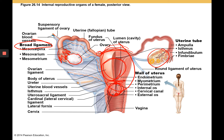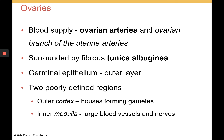The external os is near the vagina and the internal os is near the isthmus of the uterus. The most inferior structure is the vagina. The wall of the uterus has three layers: the innermost is the endometrium, the middle is the myometrium, and the outermost layer is the perimetrium. Next we will talk more about the ovaries, their blood supply, and the female reproductive system in greater detail.